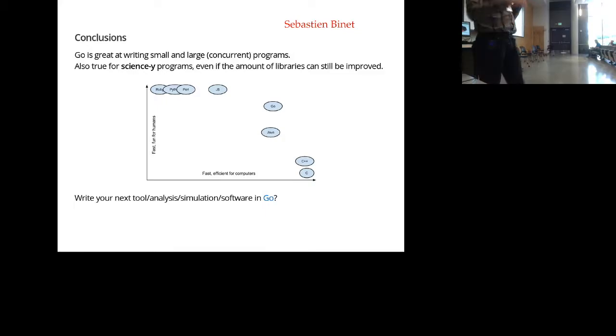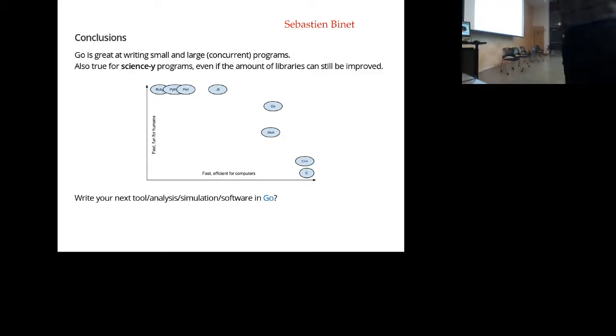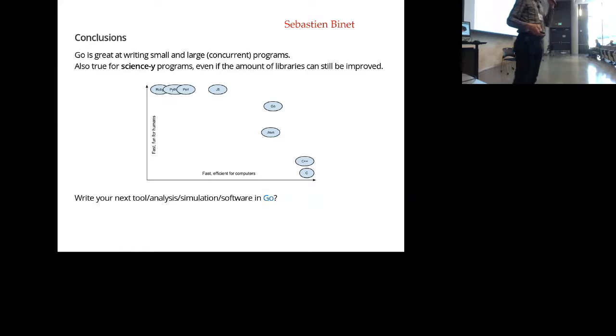You can even be more ambitious and basically say, well, this was an effort to join two different programming languages - Mathematica, which is nice to program in, and C, which is fast. But it would be great if we had a language that can do both of those things at the same time. Sebastian Binet tried to convince us that there is such a language called Go.